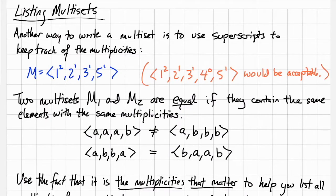Another way to write a multiset is to use some superscripts to keep track of the multiplicities. We can write that as 1 superscript 2, 2 superscript 1, 3 superscript 1, and 5 superscript 1 to keep track of the multiplicities of each of those elements. Writing down 4 to the 0 just lets us know that there aren't any 4s.